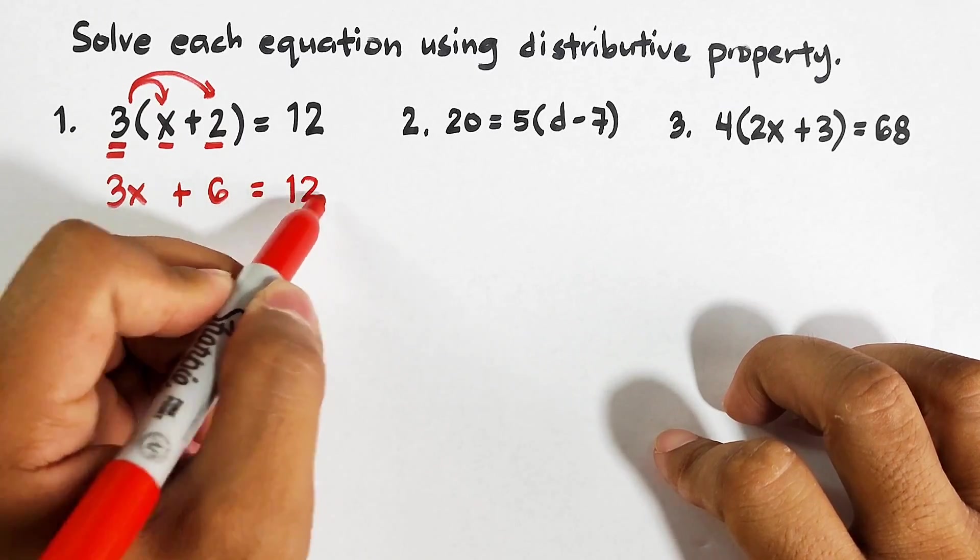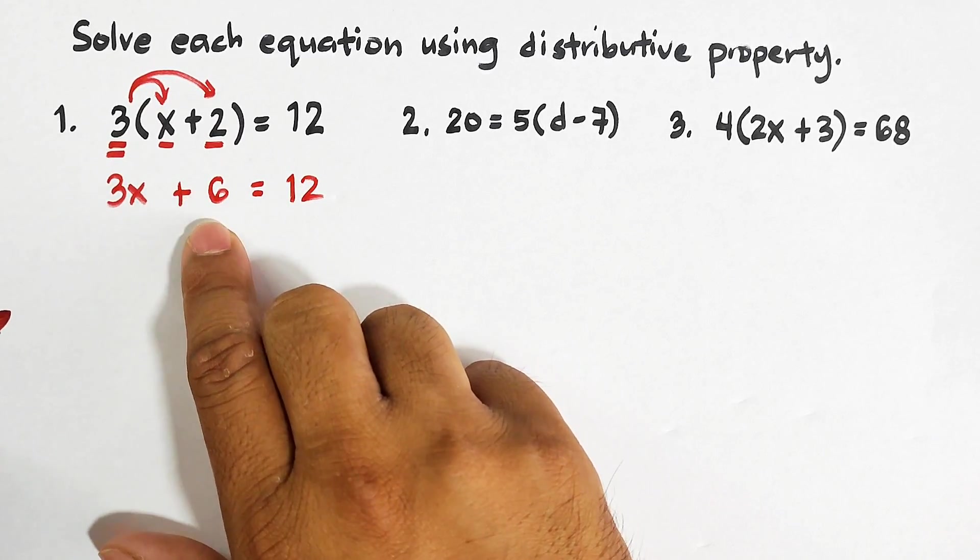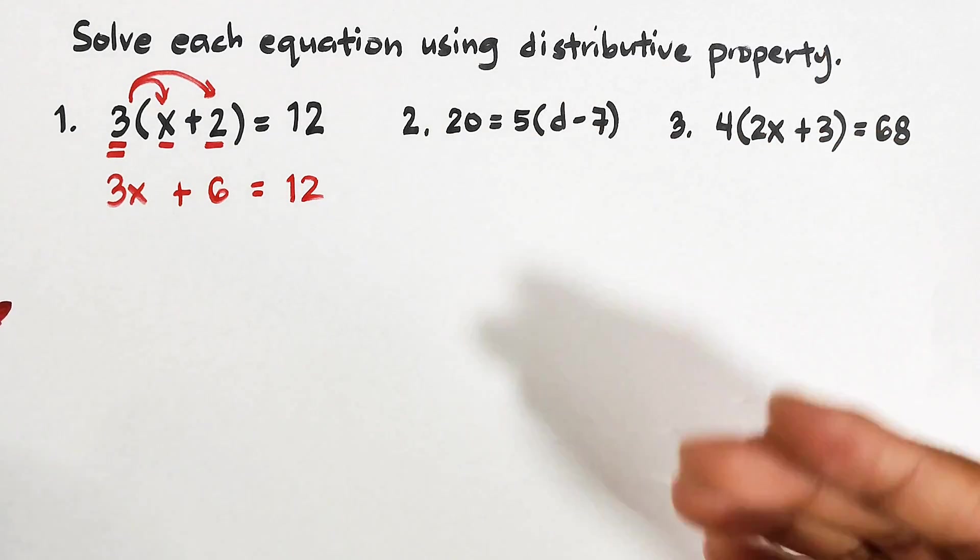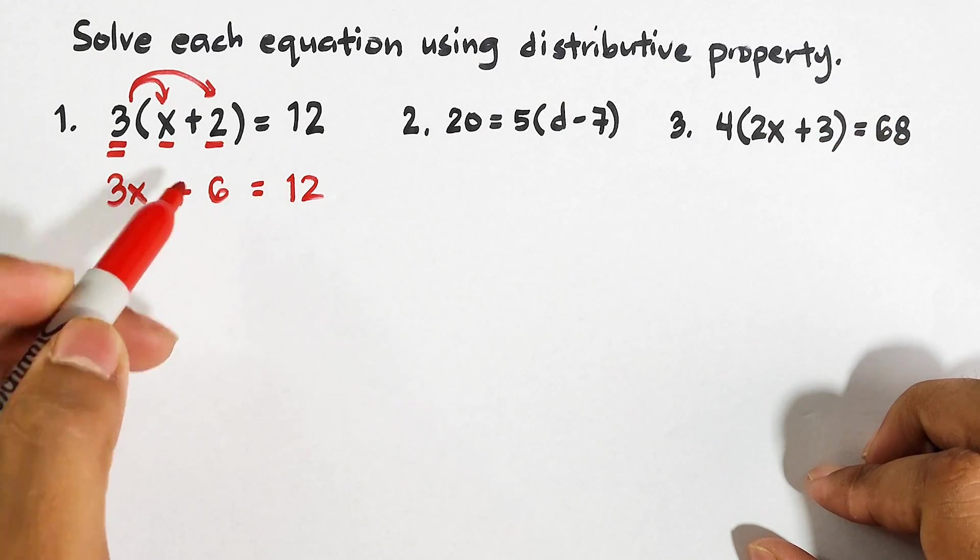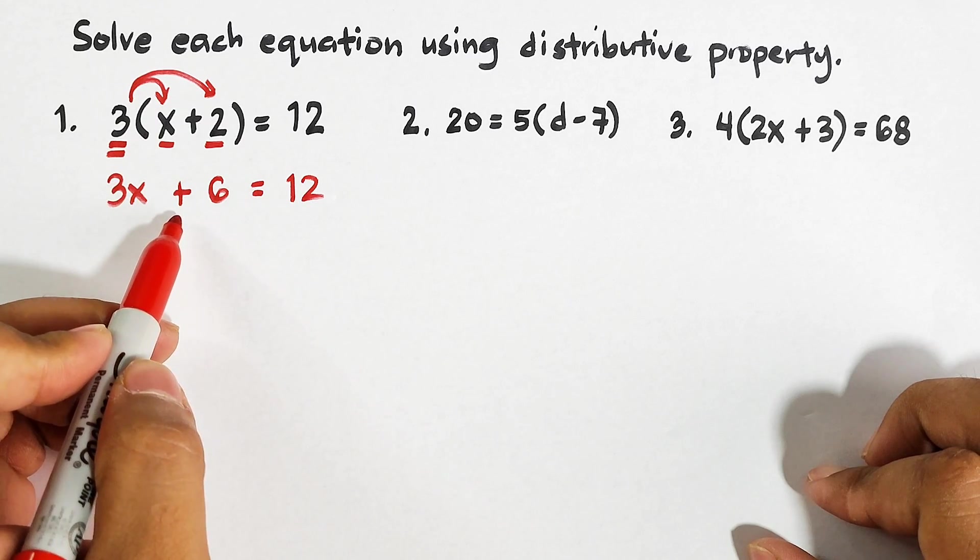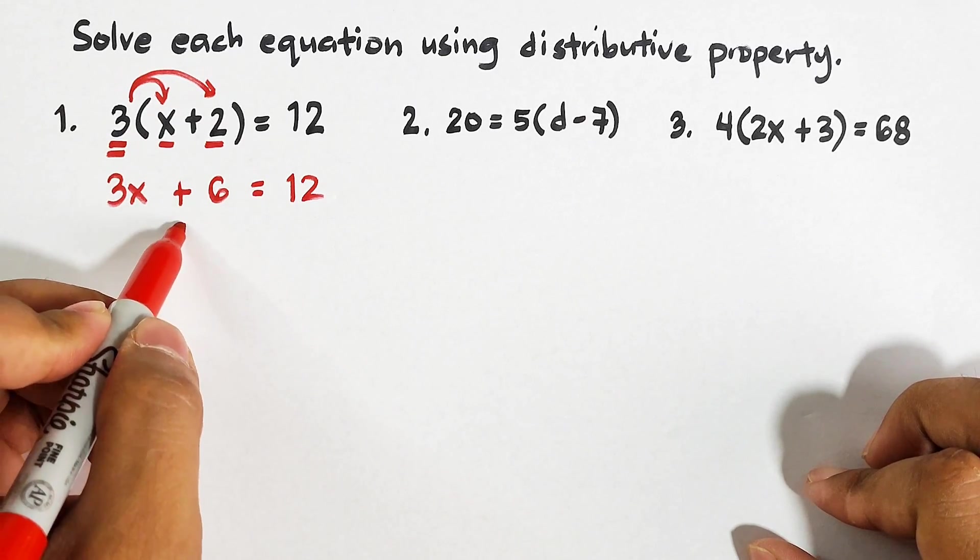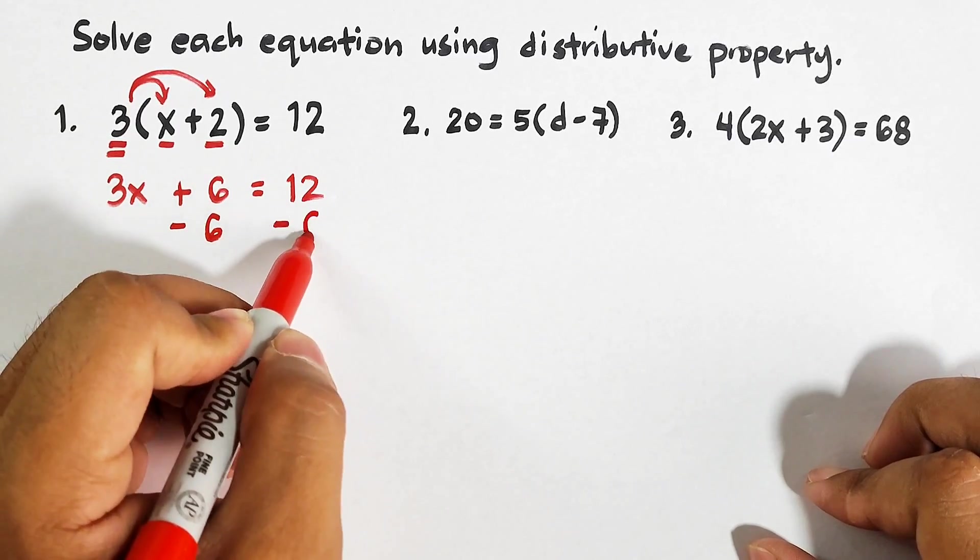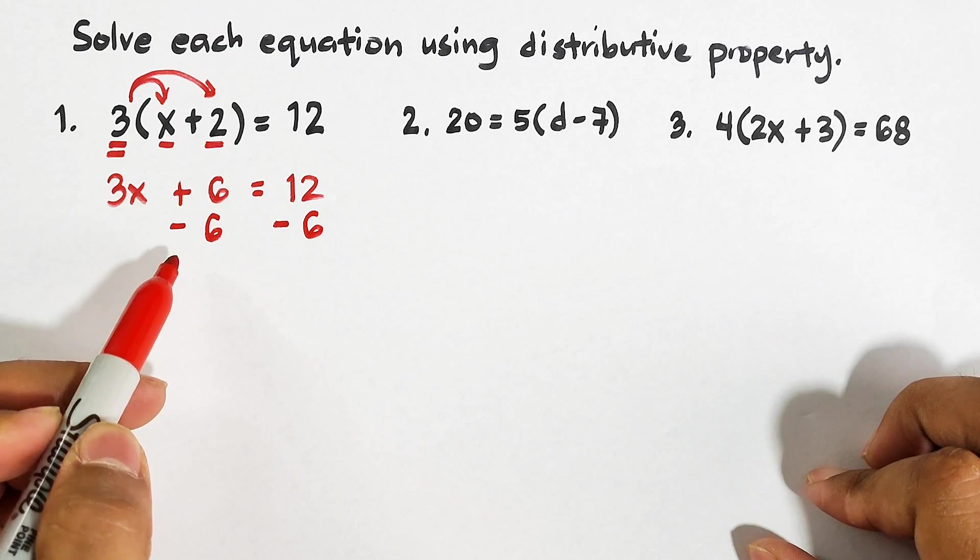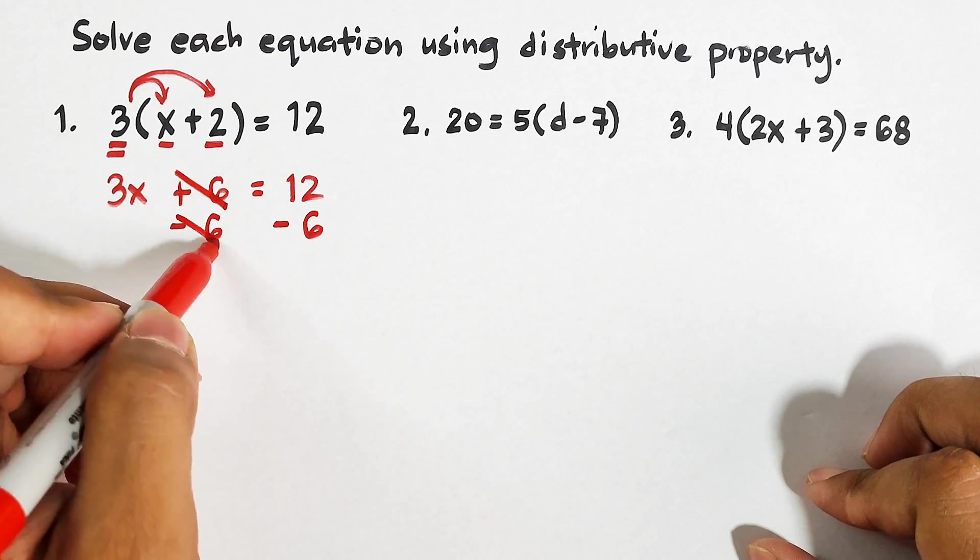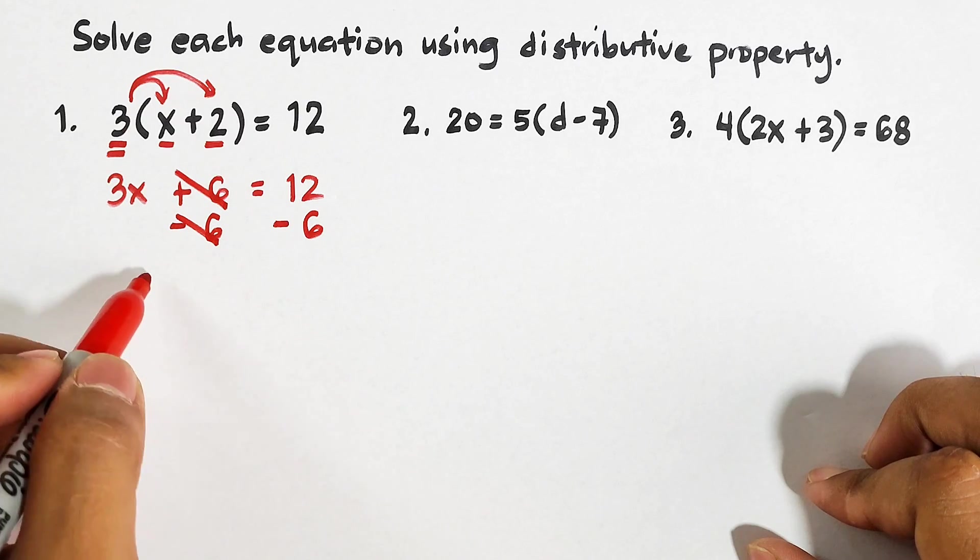Now we need to eliminate 6. From our previous video, we need to subtract this, or we need to do something to reverse this operation. From plus 6, we need to subtract 6 on both sides of the equation. So this is plus 6 minus 6, that would be 0, and we can easily cancel this out. What remains here on the left side of the equation is 3x.